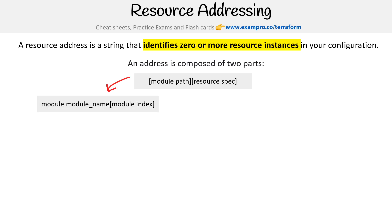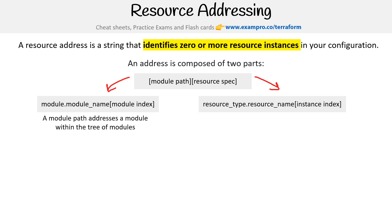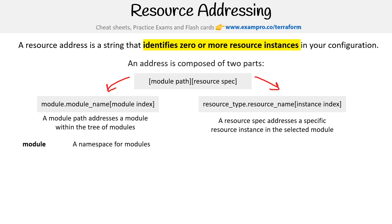Expanding out the module path, it would be: module, module name, module index. On the resource spec, this is resource type dot resource name, and if there are multiple instances, you give it an index. The module path addresses a module within a tree of modules, while a resource spec addresses a specific resource instance in the selected module.